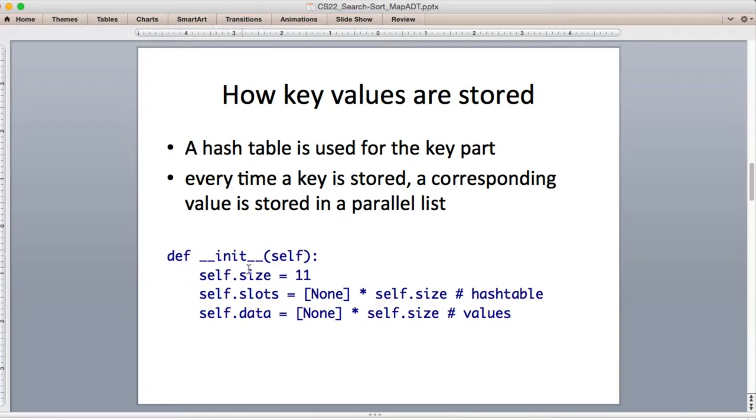But the constructor sets an initial size for how many slots there are that's used throughout the code. And then it has a slots list, which is the actual hash table. So this is where the keys are stored. And then it's got a data list, which is a separate list where the values are stored. And we're going to use a principle called parallel arrays.